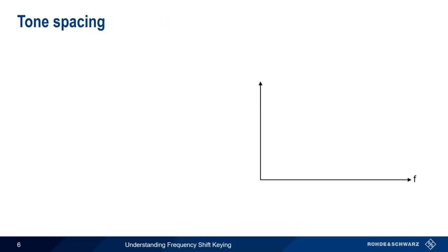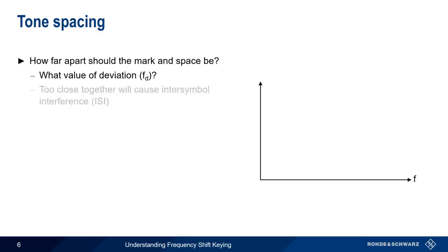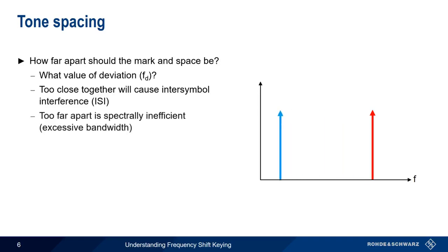An important question in FSK is how far apart should the mark and space be? More precisely, what value of deviation should we use? If the two tones are too close together, they could interfere with each other, something often called inter-symbol interference. If they're too far apart, this is spectrally inefficient. That is, the signal uses too much bandwidth. So a good place to start would be explaining how we can compute the bandwidth of an FSK signal.